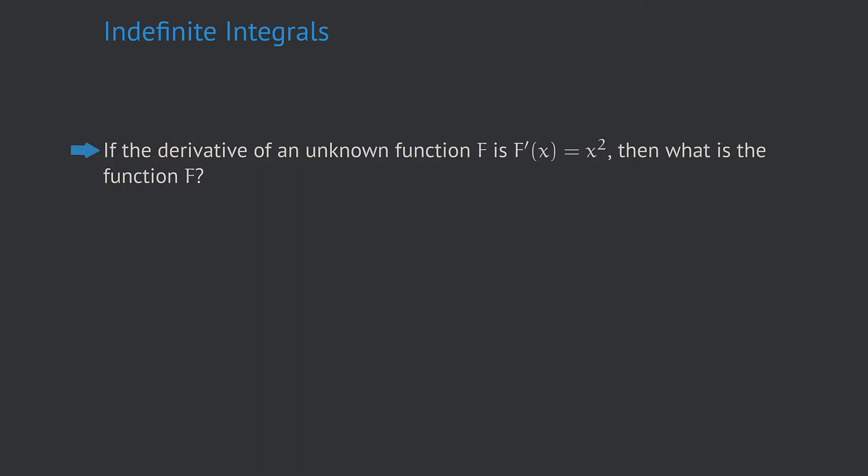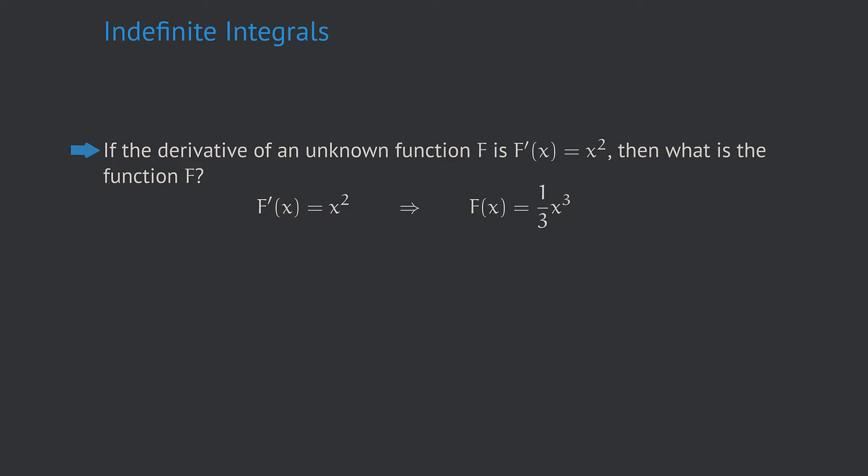In the case of a specific example, the question is: if the derivative of an unknown function capital F is x squared, then what is the function capital F? It is not hard to guess the solution by inverting the rules of differentiation. The solution is capital F equals one third times x to the third power. We can verify this by differentiating capital F, which gives us x squared.